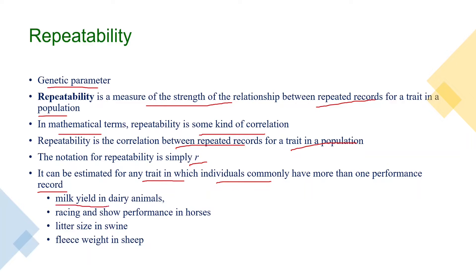For example, milk yield in dairy animals has more than one record, so you can estimate repeatability for it. Other traits in dairy animals include calving interval and lactation length or lactation yield. In horses, racing and show performance are repeated traits. In swine, you can estimate repeatability for litter size, and in sheep for fleece weight.